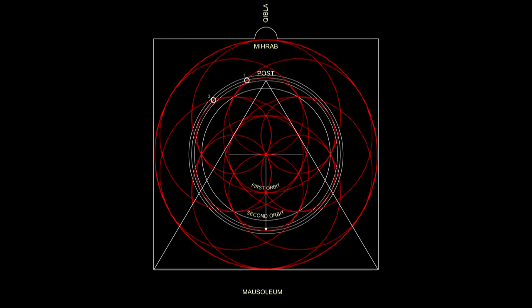The intersection of the circles with the perimetral circumference of the Sama area marks the position of twelve pillars supporting the dome of the Samakana itself, and, symbolically, the celestial spheres of the Sama area - the sky and cosmos.